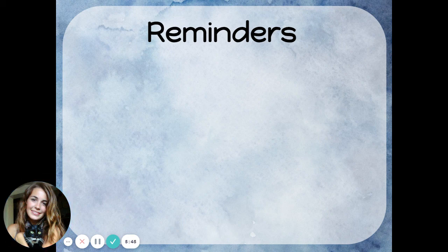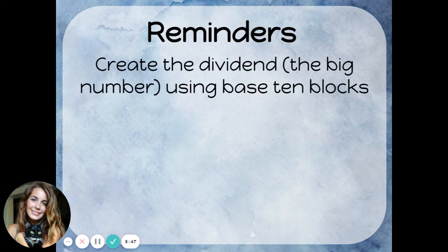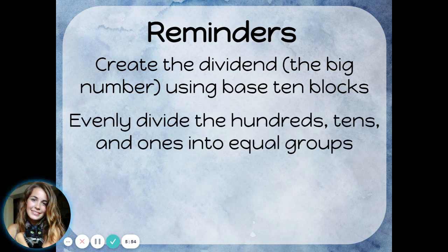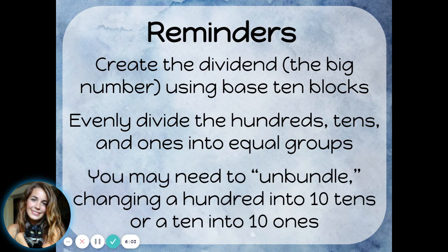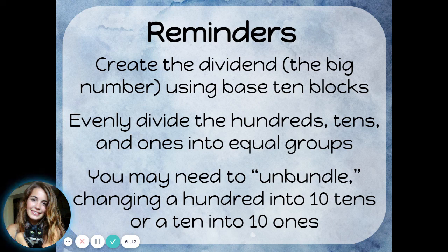Here are some reminders to help you get started using this equal sharing strategy: create the dividend — the big number — using base 10 blocks, then evenly divide the hundreds, tens, and ones, thinking about it like dealing cards. You may need to unbundle, changing a hundred into ten tens or a ten into ten ones, so that you can keep dividing. If you end up with any leftover ones, that's going to be your remainder.